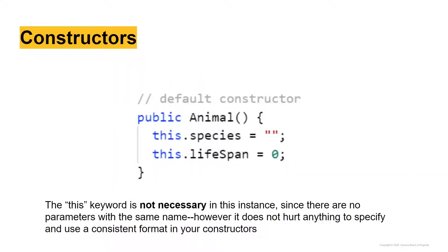Here we have a simple default constructor. The class is called Animal, so we write 'public Animal()' with no parameters in the parentheses, because this is the default unparameterized constructor. We set the species variable to an empty string and lifespan equal to zero. Basically, if someone just wants a generic animal object without providing specific attributes, we set kind of empty, basic default values for species and lifespan.